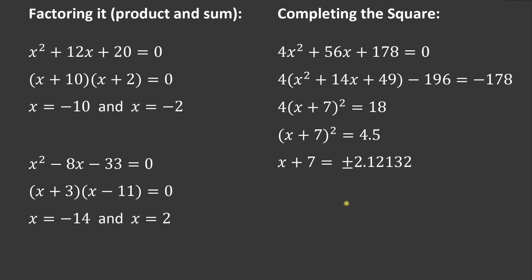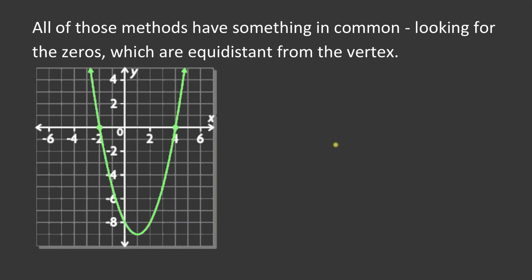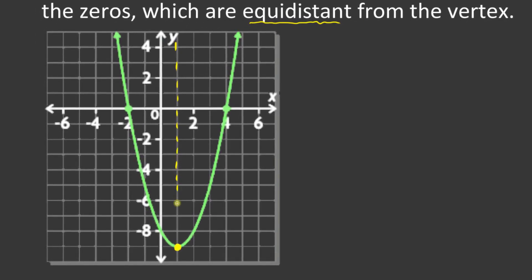One thing I want to show you is that all of those methods have something in common. They're all looking for the zeros, and the zeros are equidistant from the vertex — and that's huge. Equidistant just means same distance. If I have the vertex of a parabola, we call that center line the axis of symmetry. So if I was looking at a y-value of negative five, I would be looking for two points that are also equidistant from that vertex.